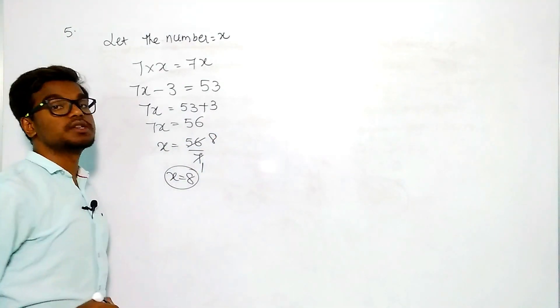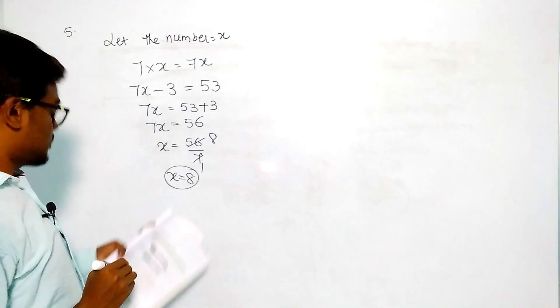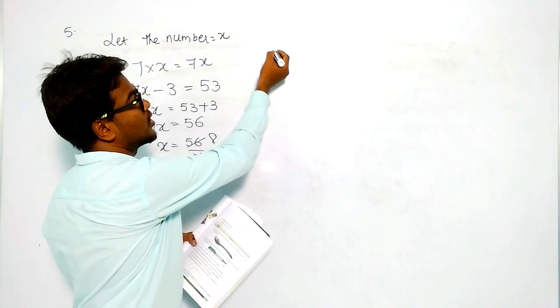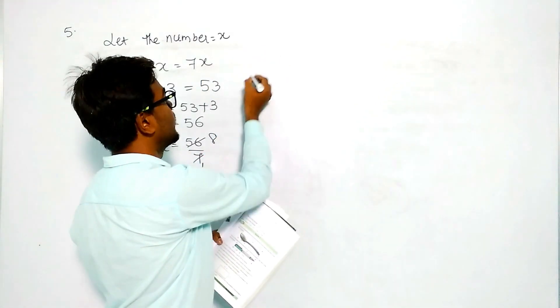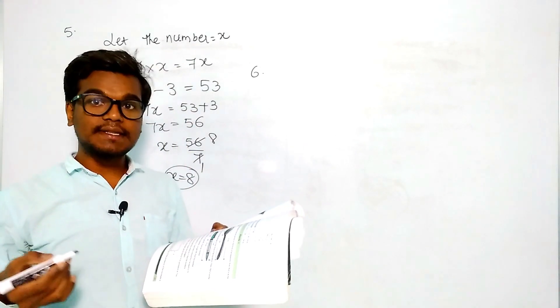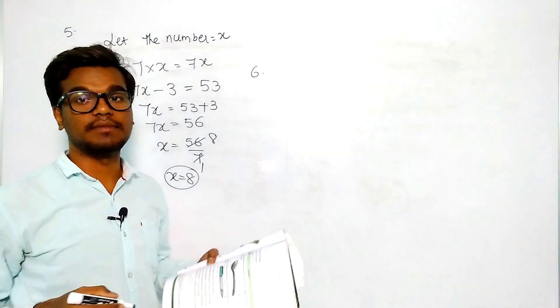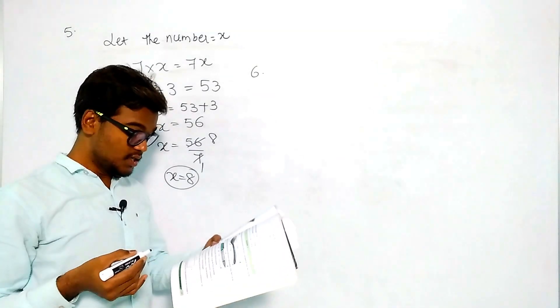So the required number will be 8. Next question - our sixth question is: sum of two numbers is 95. If one exceeds the other by 3, then find the numbers.